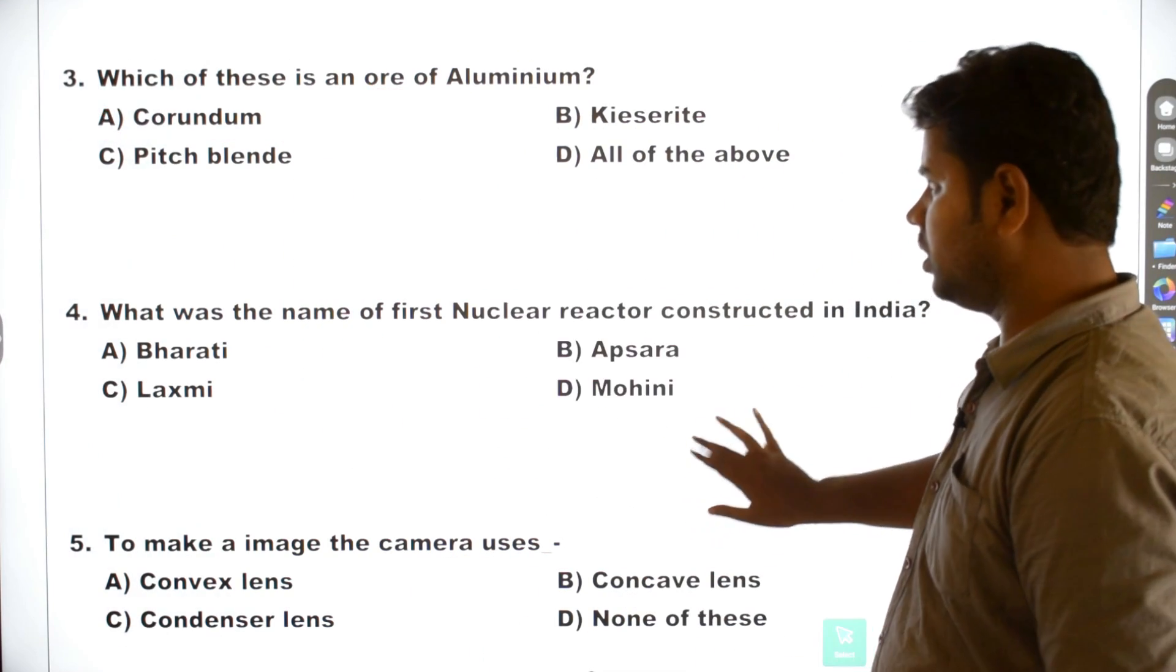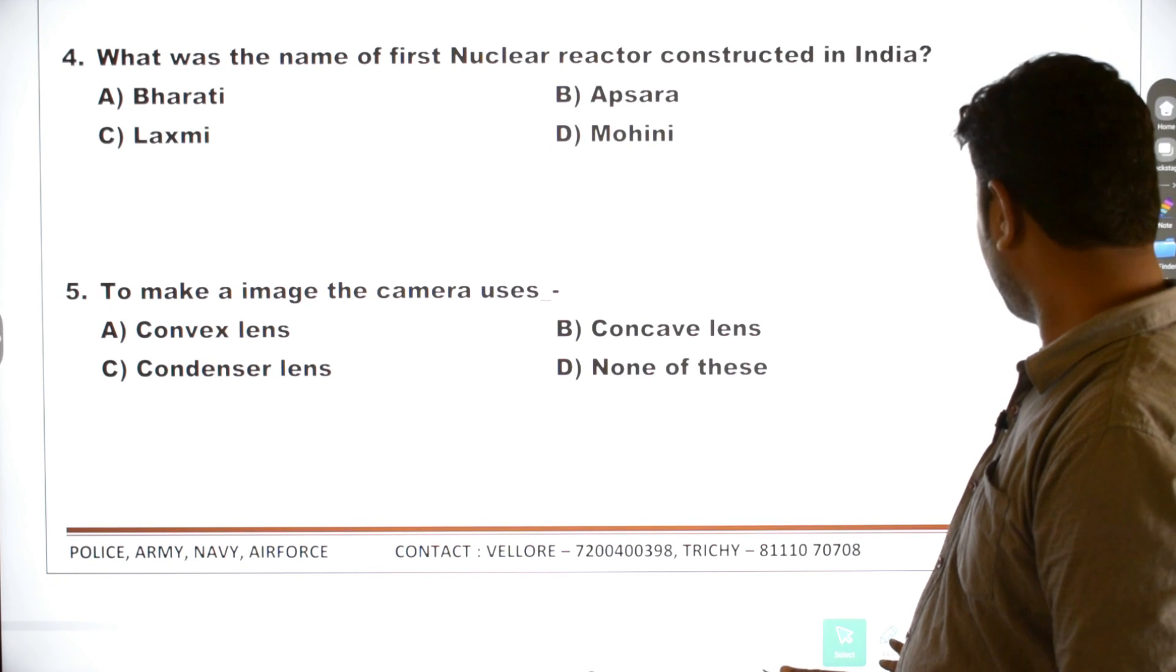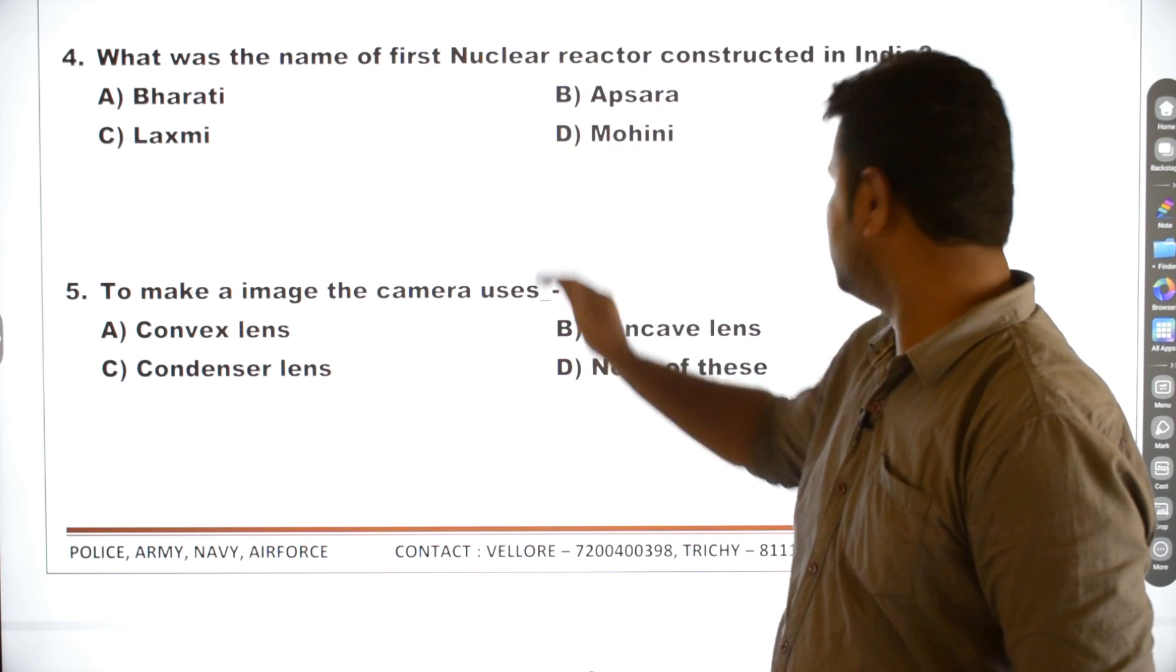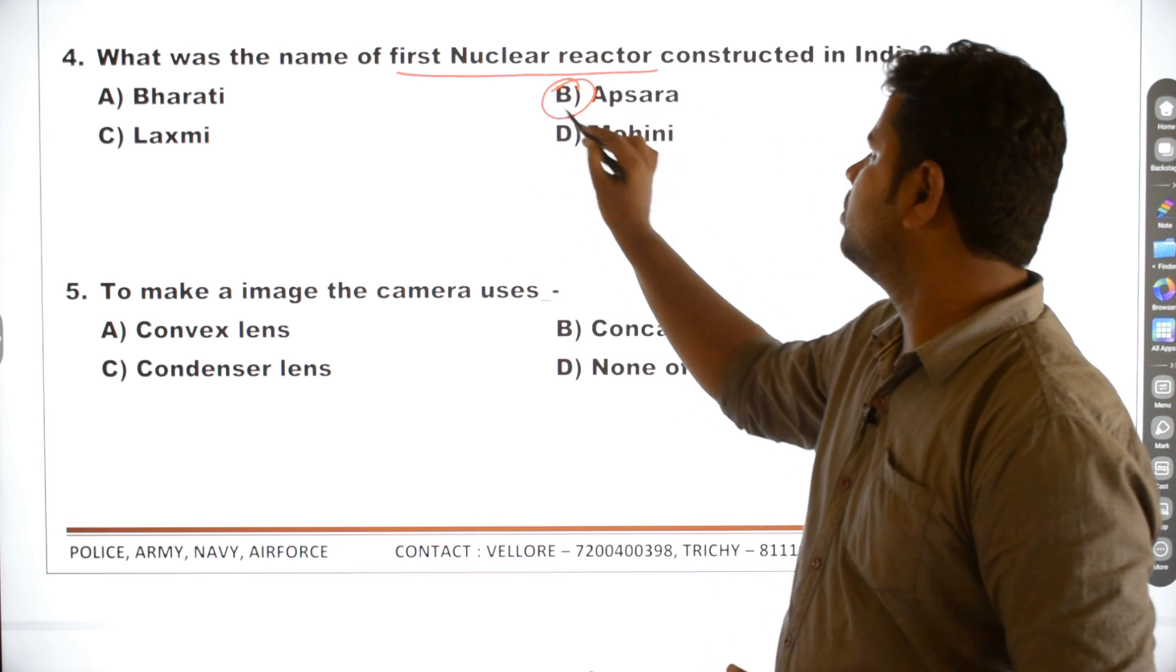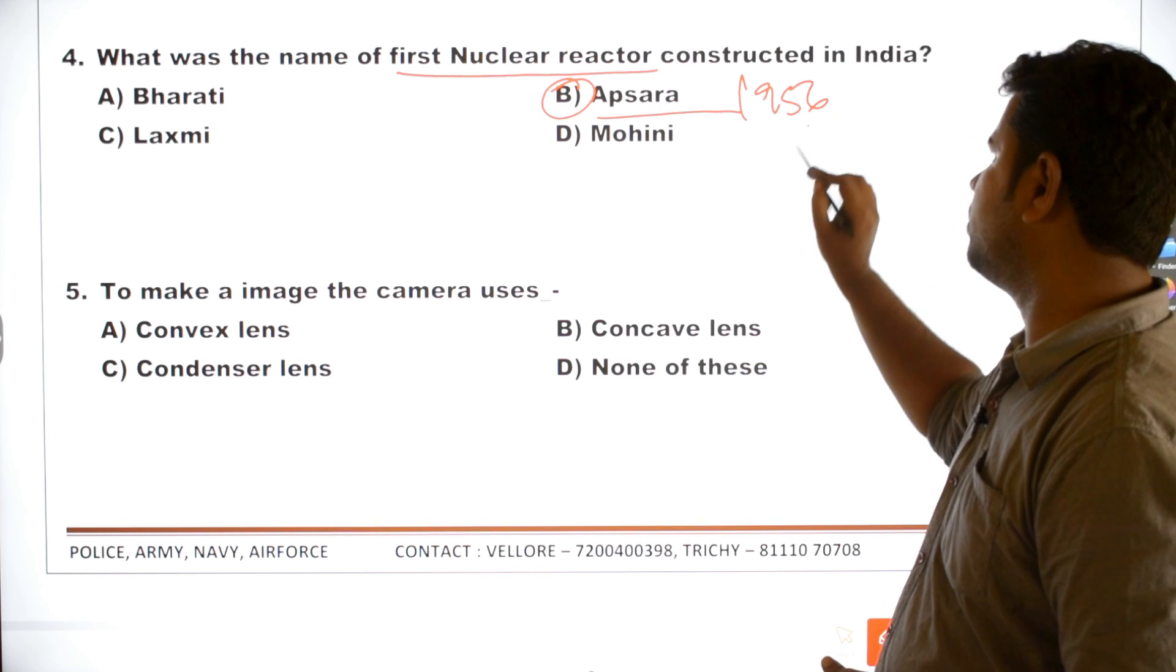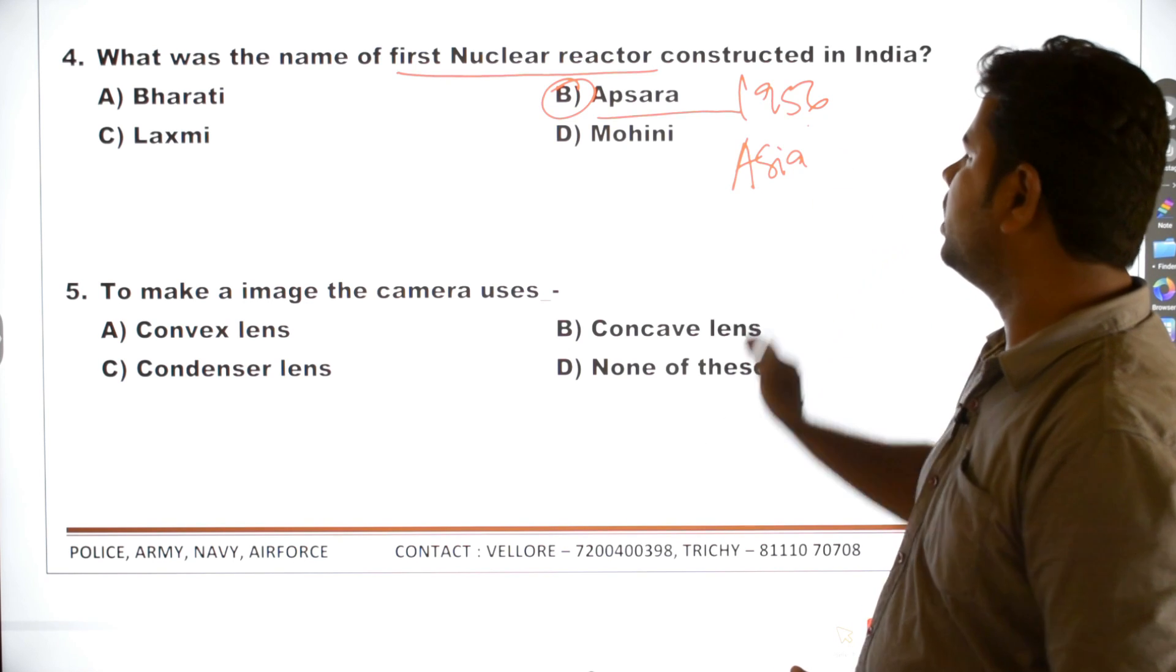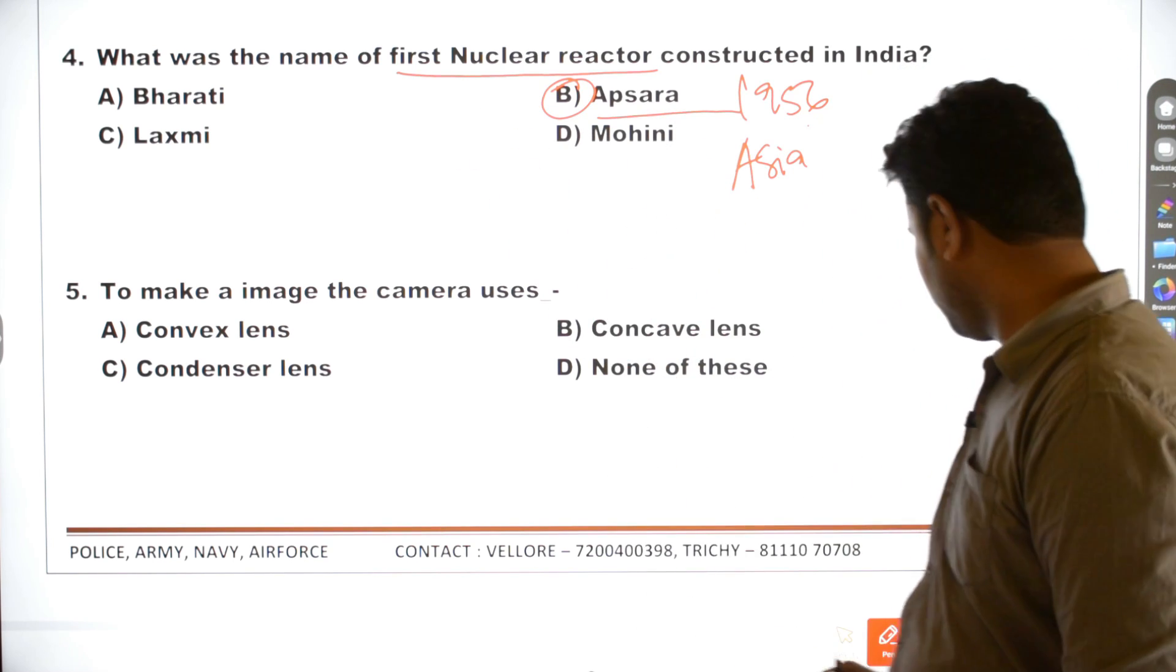The next one, fourth one. What was the name of first nuclear reactor constructed in India? First nuclear reactor in India. The first nuclear reactor is in 1956. This is India's first nuclear reactor. The fourth question is B.